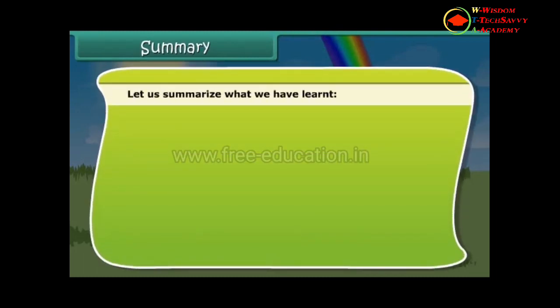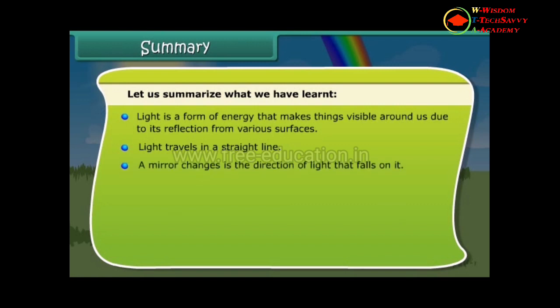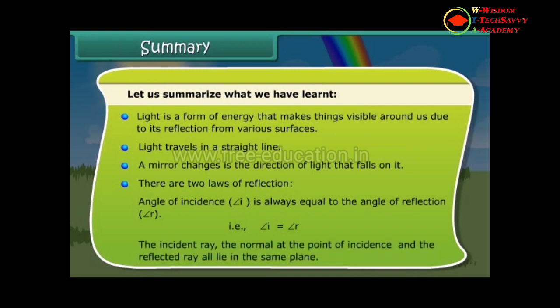Let us summarize what we have learned. Light is a form of energy that makes things visible around us due to its reflection from various surfaces. Light travels in a straight line. A mirror changes the direction of light that falls on it. There are two laws of reflection: the angle of incidence is always equal to the angle of reflection (angle I = angle R), and the incident ray, the normal at the point of incidence, and the reflected ray all lie in the same plane.